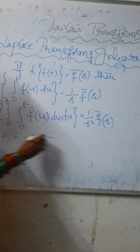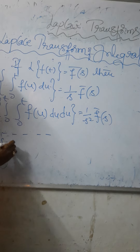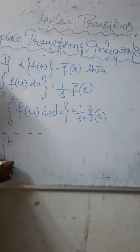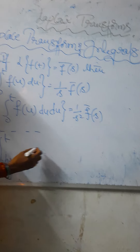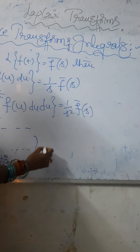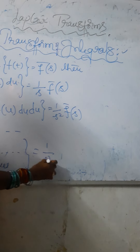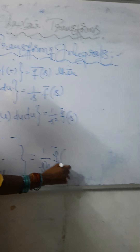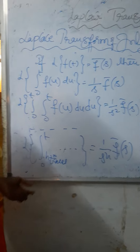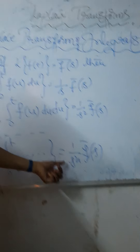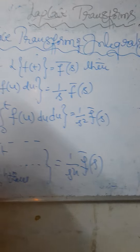Laplace transform of the n-times repeated integral of 0 to t of f of u equals 1 by s to the power n times f bar of s. So those are the Laplace transform of integrals: single integral gives 1 by s times f bar of s, double integral gives 1 by s squared times f bar of s, and n times gives 1 by s to the power n times f bar of s.